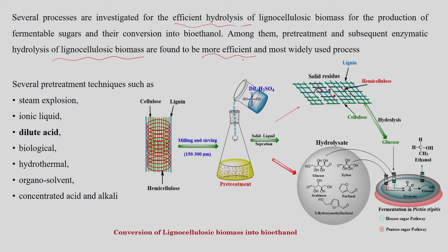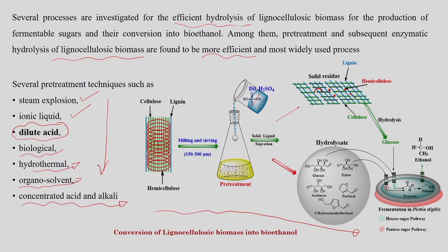Several processes have been investigated for efficient hydrolysis of lignocellulosic biomass. Pretreatment techniques include steam explosion, ionic liquid, dilute acid, biological processes, hydrothermal techniques, organosolvent, and concentrated acid and alkali techniques. Among these, dilute acid is the most widely used and effective pretreatment technique. The lignocellulosic biomass contains cellulose, hemicellulose, and lignin fractions.